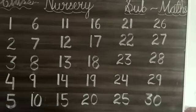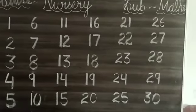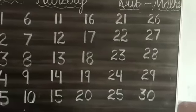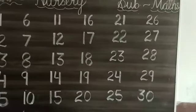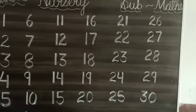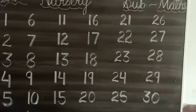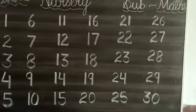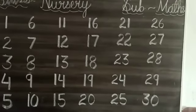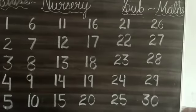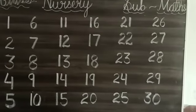2, 1, 21, 2, 2, 22, 2, 3, 23, 2, 4, 24, 2, 5, 25, 2, 6, 26, 2, 7, 27, 2, 8, 28, 2, 9, 29, 3, 0, 30.